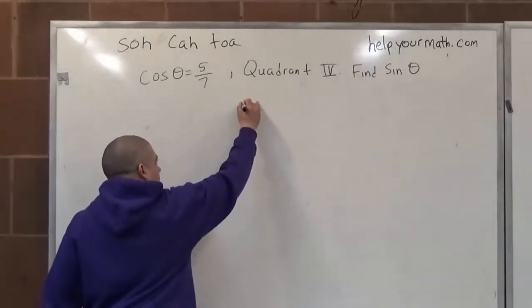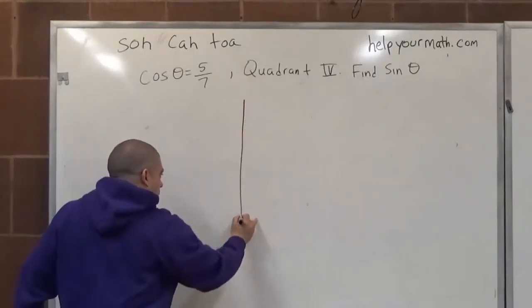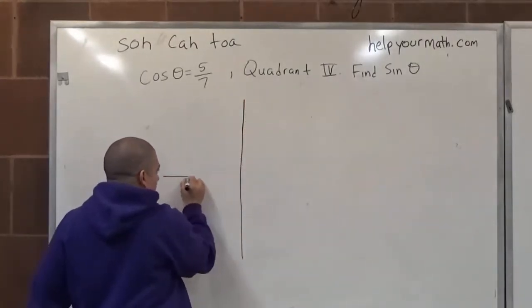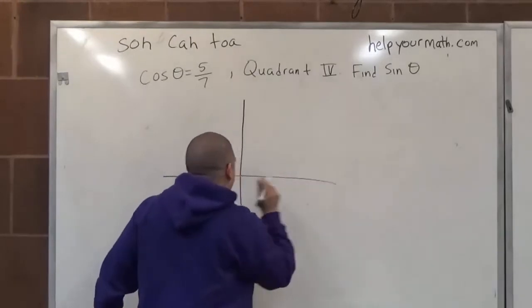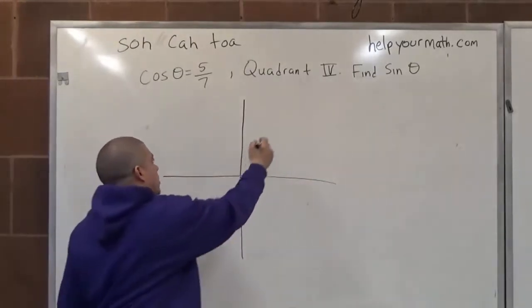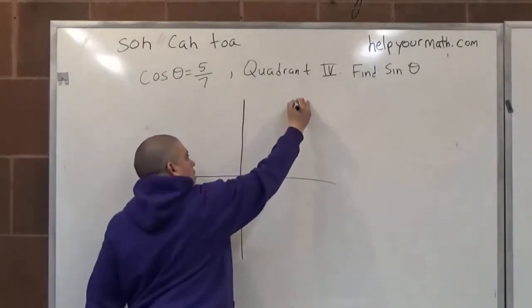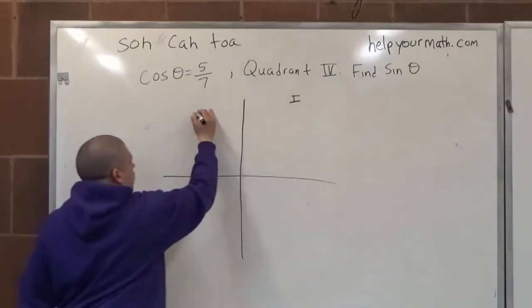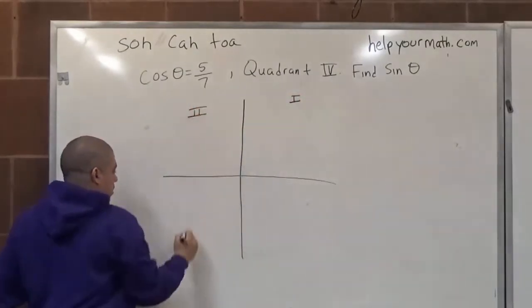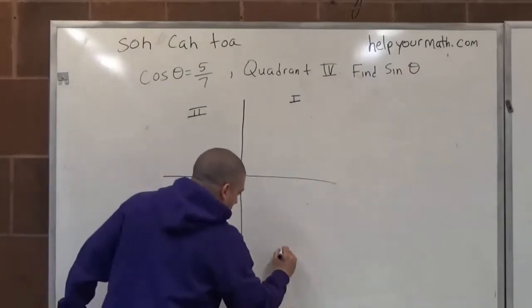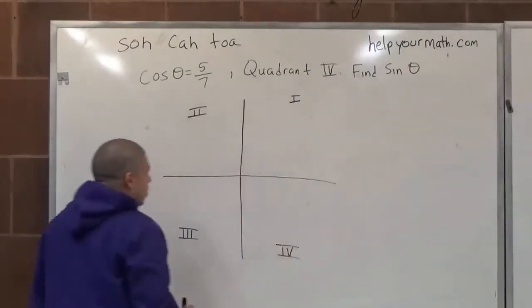The technique I'm going to use is to draw my x and y axis again. This is quadrant 1, this is quadrant 2, this is quadrant 3, and this is quadrant 4.